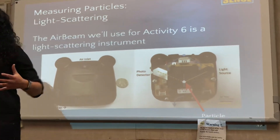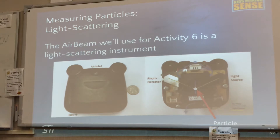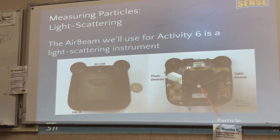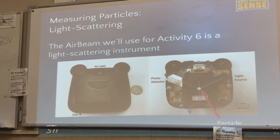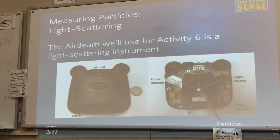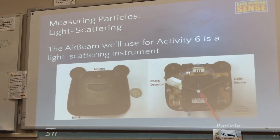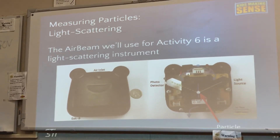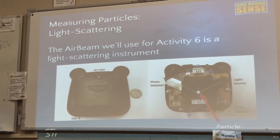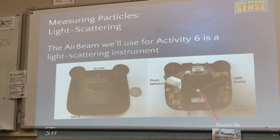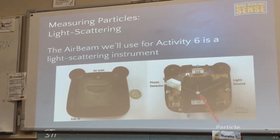Certain wavelengths are scattered better than others by particles. So this is emitting an LED at a specific wavelength that we know is easily scattered by particles. You let it run for a while, and that's kind of how it's doing the measurement.